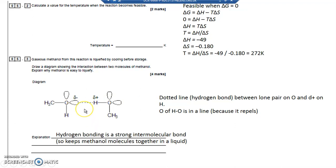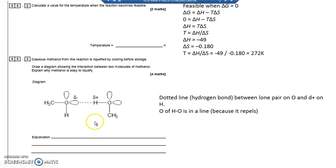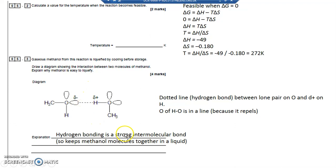Methanol is easy to liquify because it has hydrogen bonds, which are strong intermolecular bonds, making it more likely to exist as a liquid than a gas.